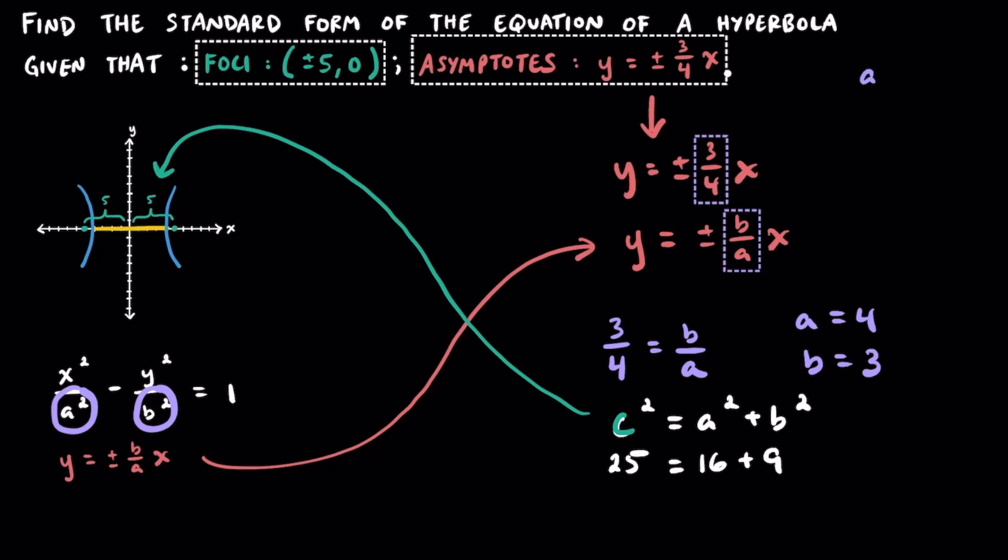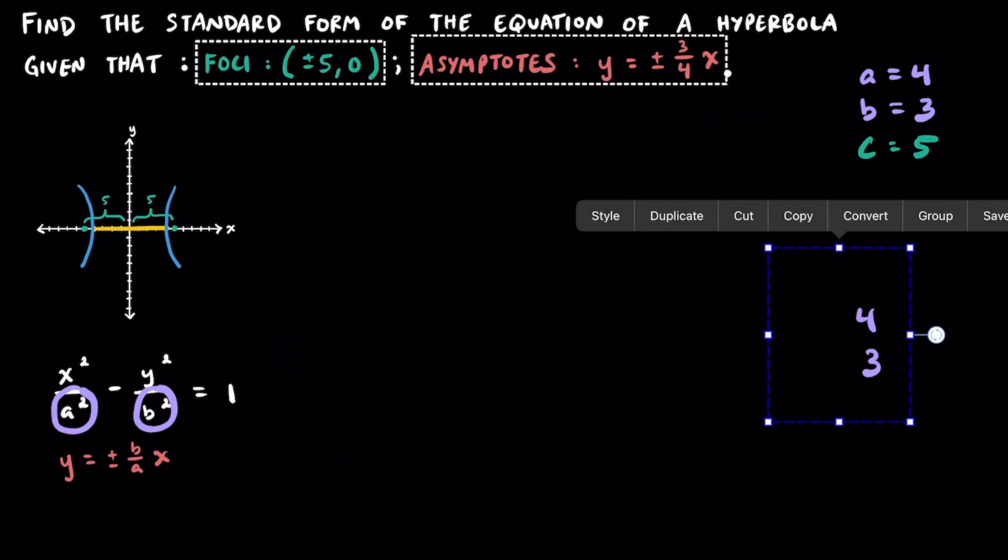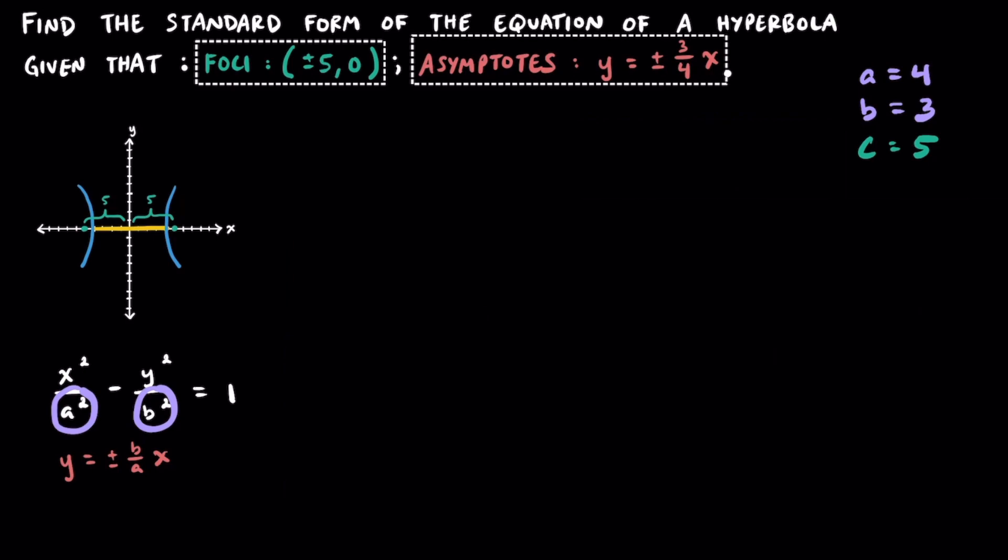Let me just jot down this information on the side real quick. So we know a is equal to 4, b is equal to 3. We figured those things out and c was equal to 5 all along. So we already had that from the beginning since we knew about the foci. OK, so let's go ahead and just get rid of all of this since we're kind of done with it. Get rid of all of that and these two as well. And I think we have all the information we need.